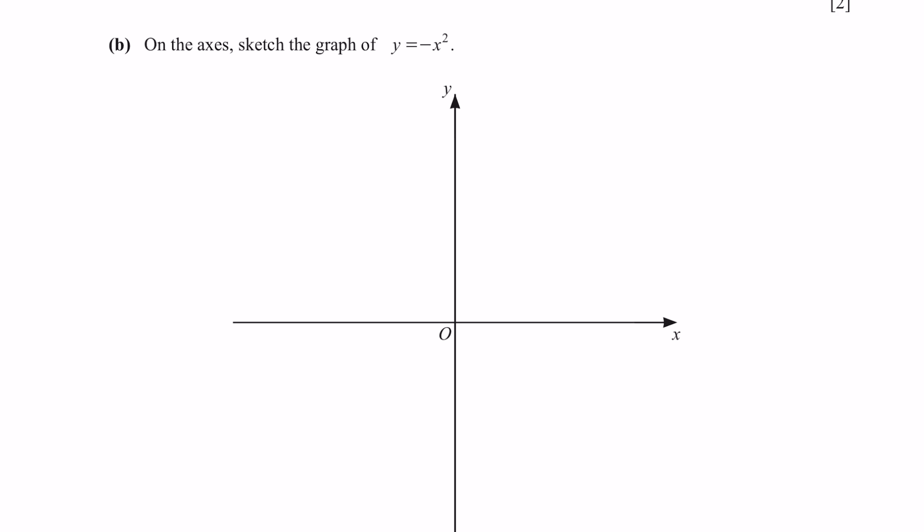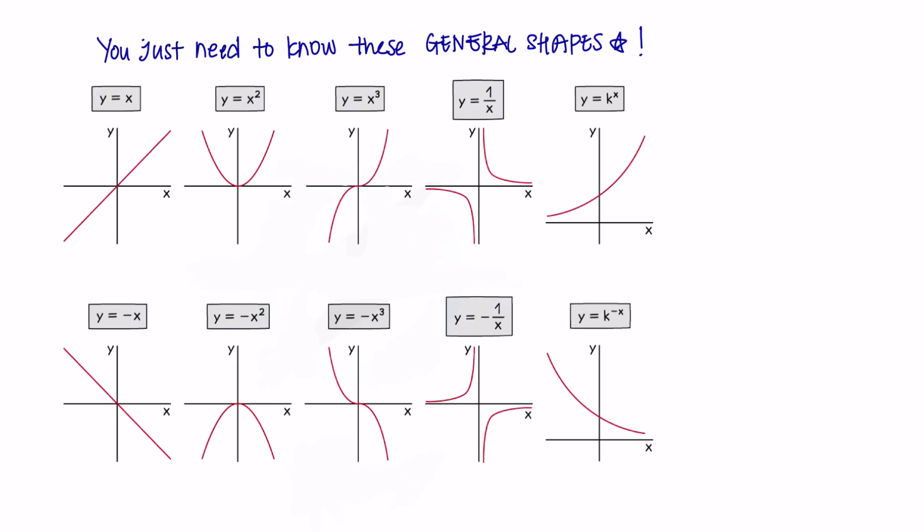Next, on the axis, sketch the graph of y equals negative x squared. When plotting graphs, you just need to know these general shapes. And the question here is to plot a graph of y equals negative x squared. So this is what the graph is supposed to look like.